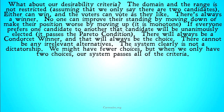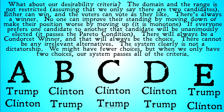Now, here's the more important claim: what about our desirability criteria? The domain and range are not restricted — we're only choosing between two candidates, but either can win. We could have a set of voters where everyone votes for Trump, or everyone votes for Clinton; voters can vote as they like with no restrictions. There's always going to be a winner since we have an odd number — always at least three people in favor of one candidate.